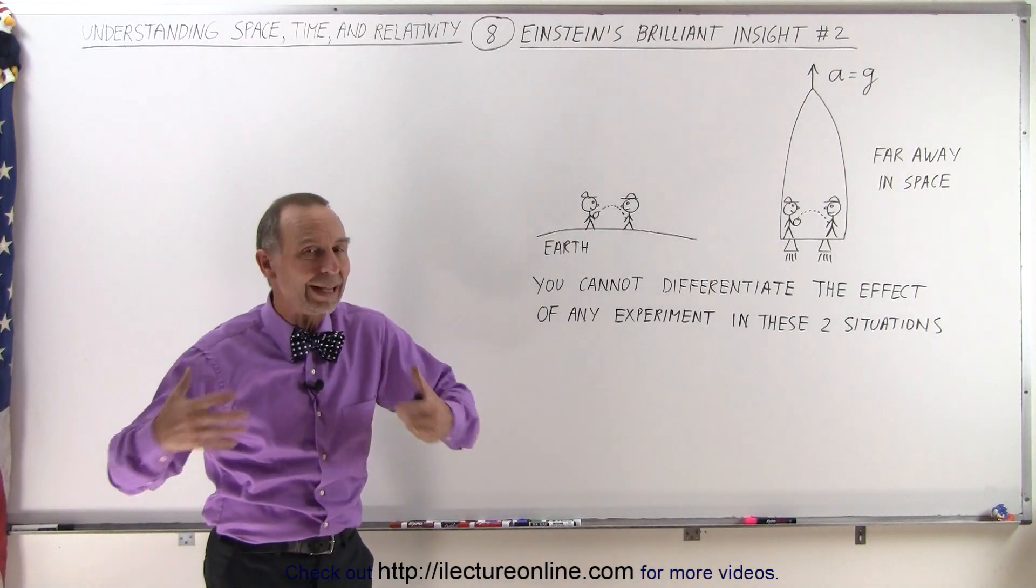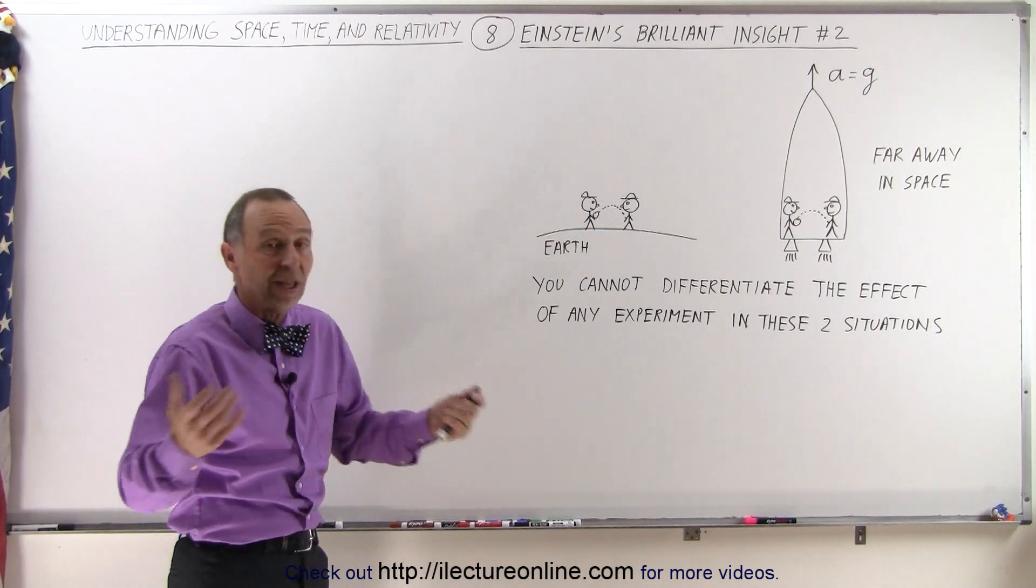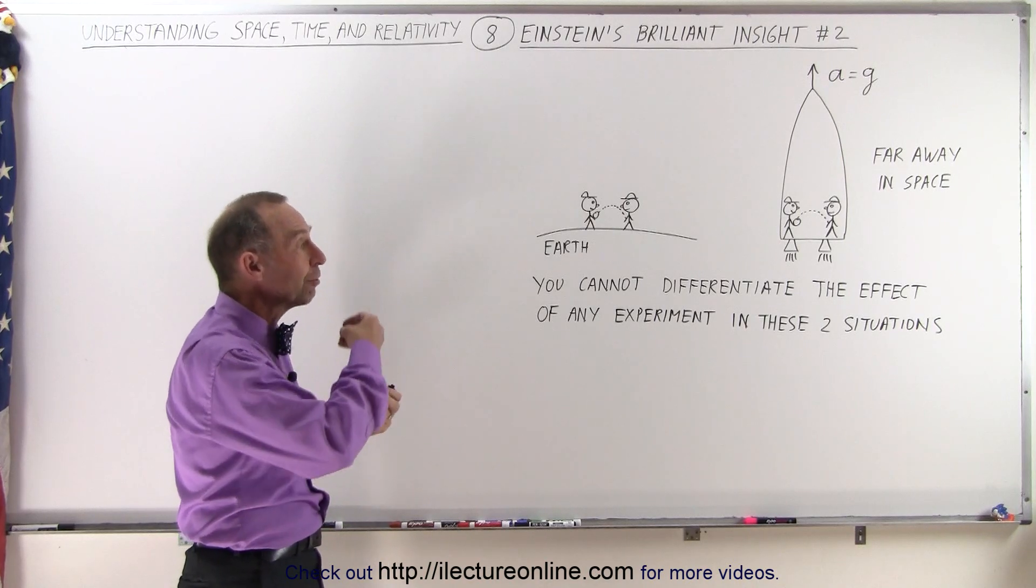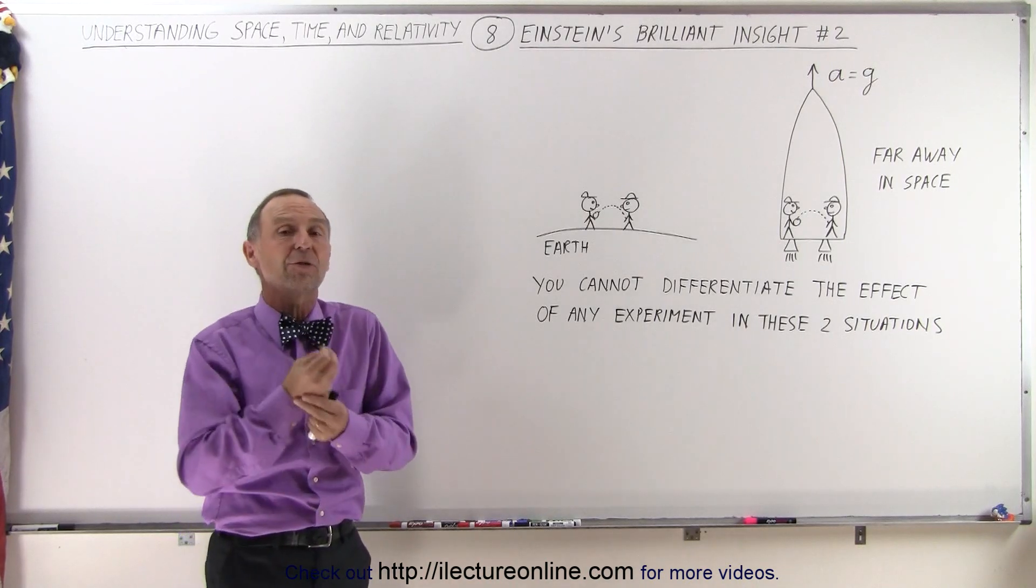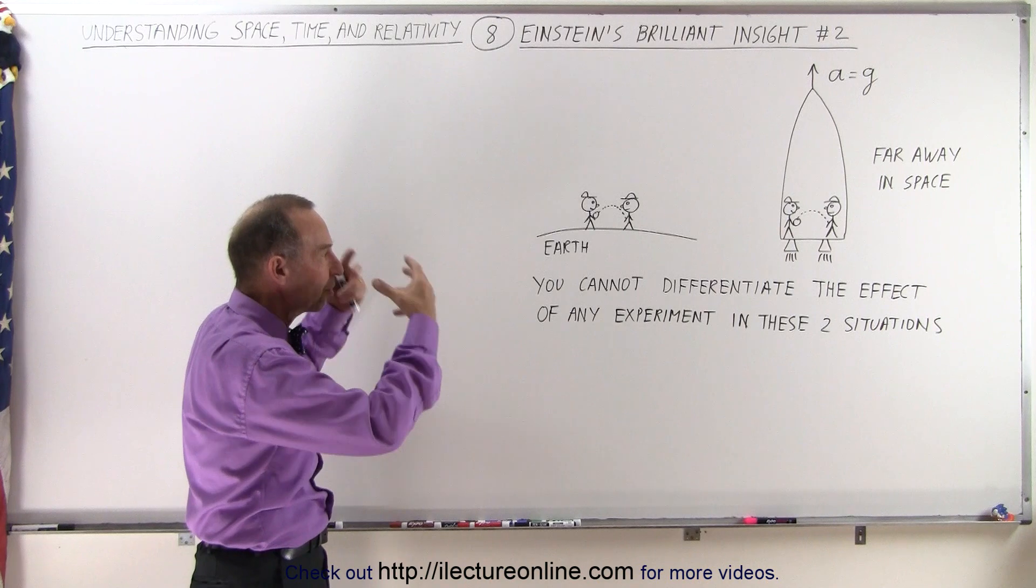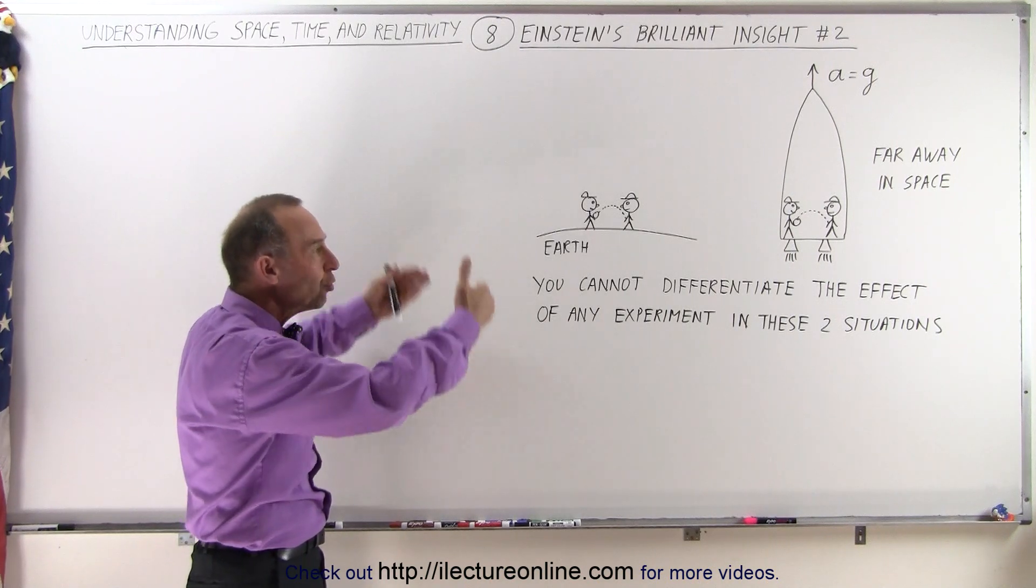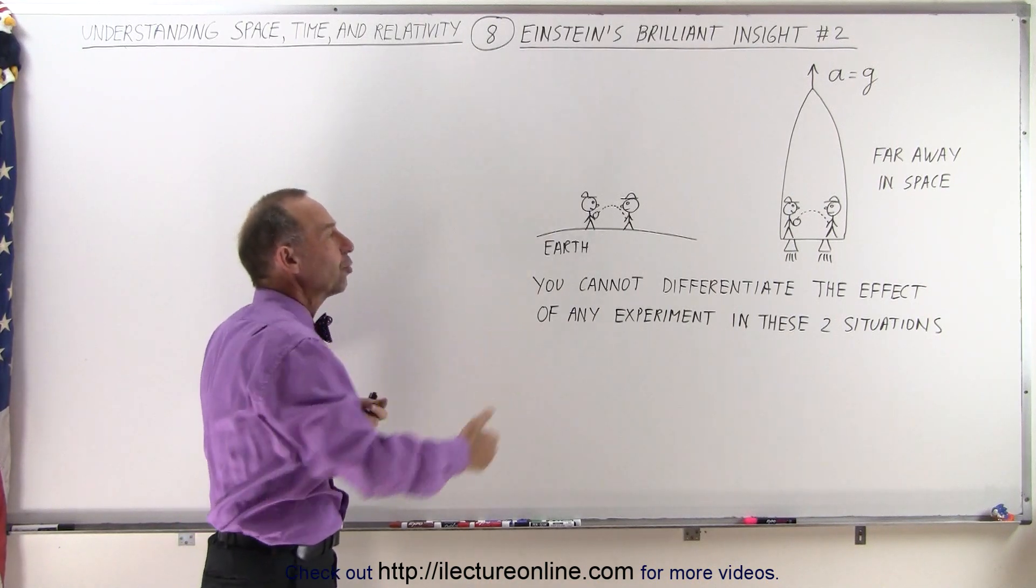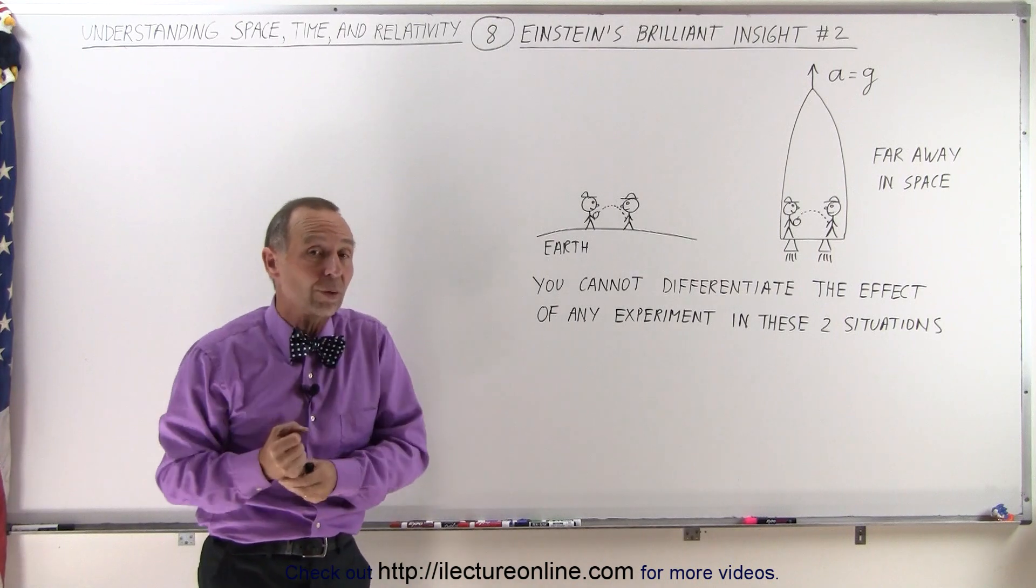At least that's what Einstein professed and he was absolutely correct. And because of that he was able to formulate the general theories of relativity. This was the start, this was the concept that there really was no difference between these two situations as far as the laws of physics were concerned.